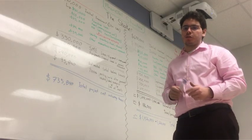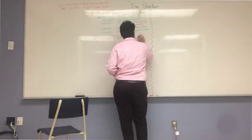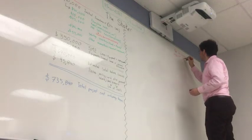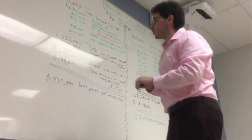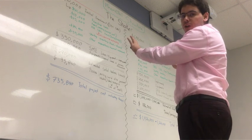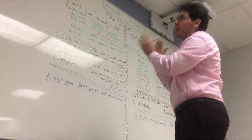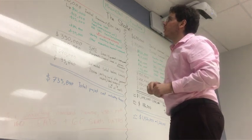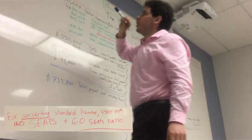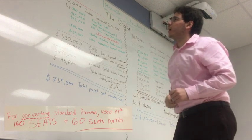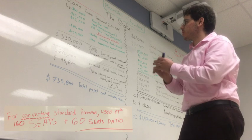Alright, so here comes the financial structure of the Shaker. First of all, I just wanted to explain that I did two kinds of financial structures. There's one that is the converting standard premises of 4,500 feet square. And with that you will have 160 seats plus 60 seats ratio.